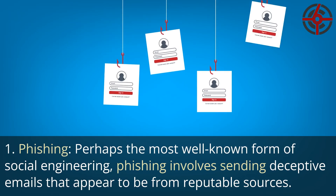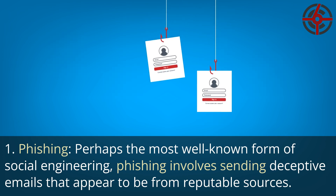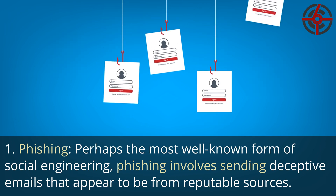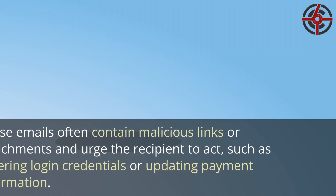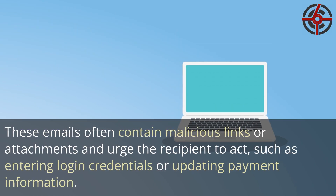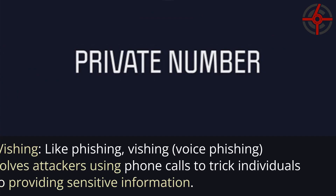Phishing — perhaps the most well-known form of social engineering — involves sending deceptive emails that appear to be from reputable sources. These emails often contain malicious links or attachments and urge the recipient to act, such as entering login credentials or updating payment information.